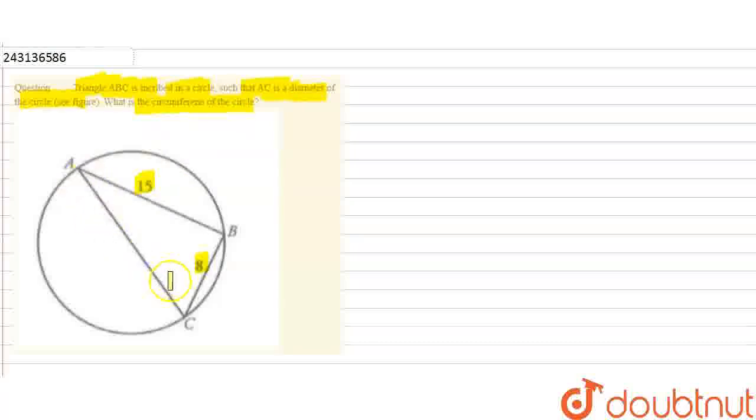If we find the value of the diameter, we can find the radius. And if we find the radius, we can find the circumference, because circumference of the circle is 2πr.